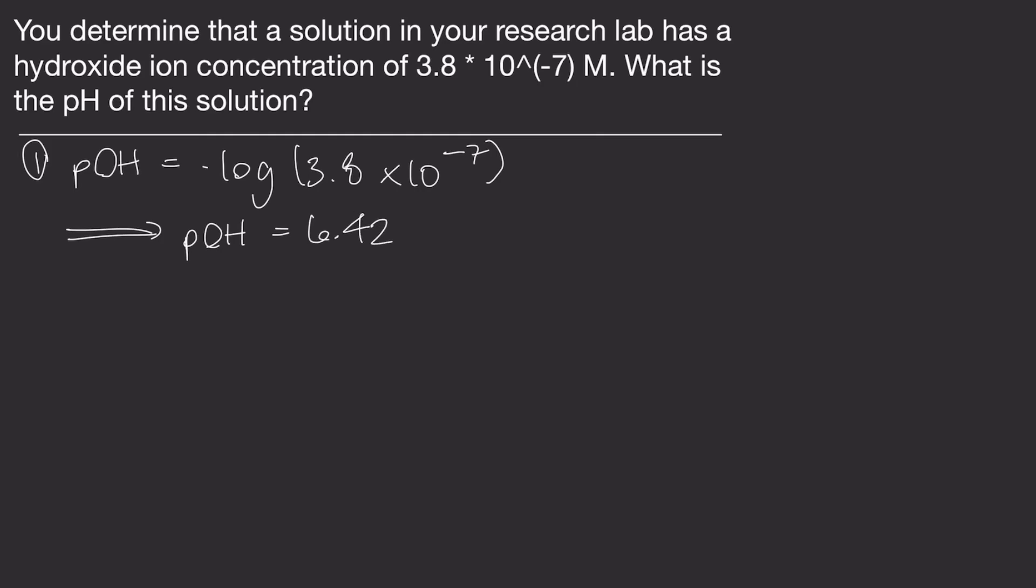Now, let's bring back the total equation. We're going to plug in our pOH again to solve for pH. Subtract 6.42 from 14 and you'll have your answer. You should get 7.58.